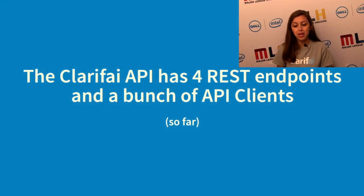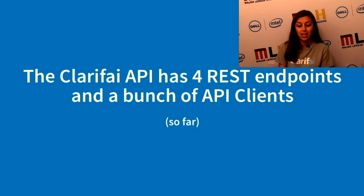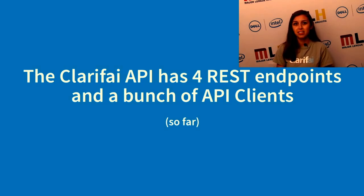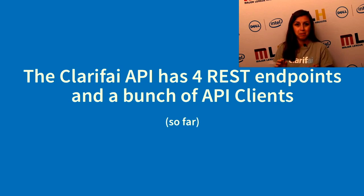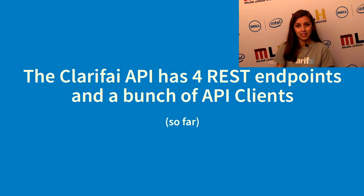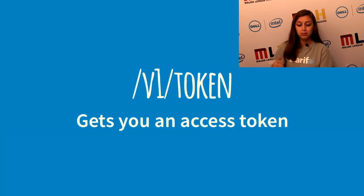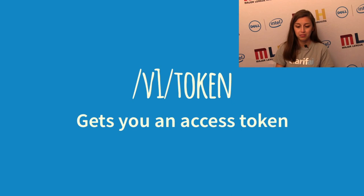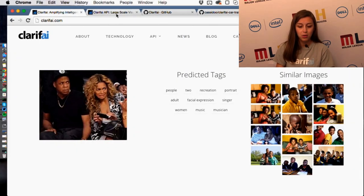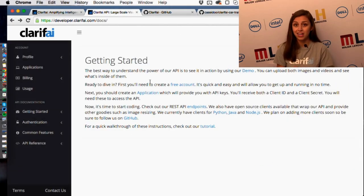The Clarify API has four REST endpoints and a bunch of API clients. Right now there are a few public ones, and some different ones that we're slowly releasing over time to different hackathons. These are the ones on the website at this moment. The endpoints are: token, where you can get an access token. When you go on the Clarify developer website, which is developer.clarify.com,